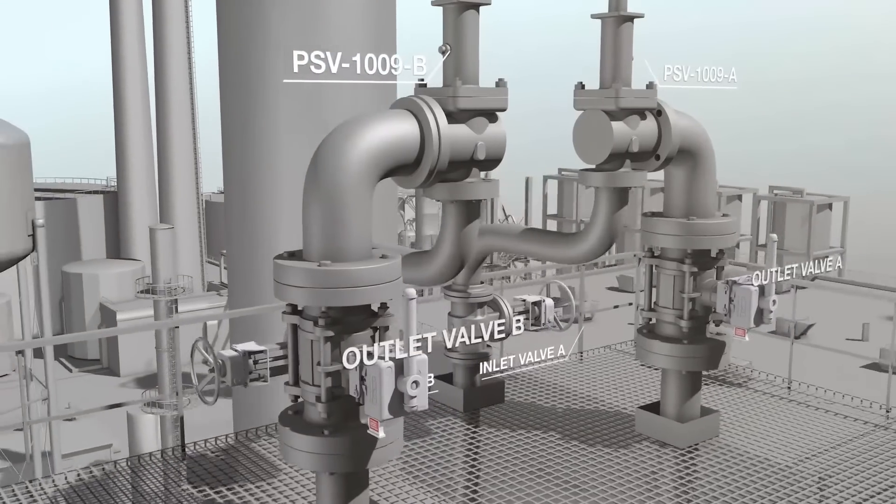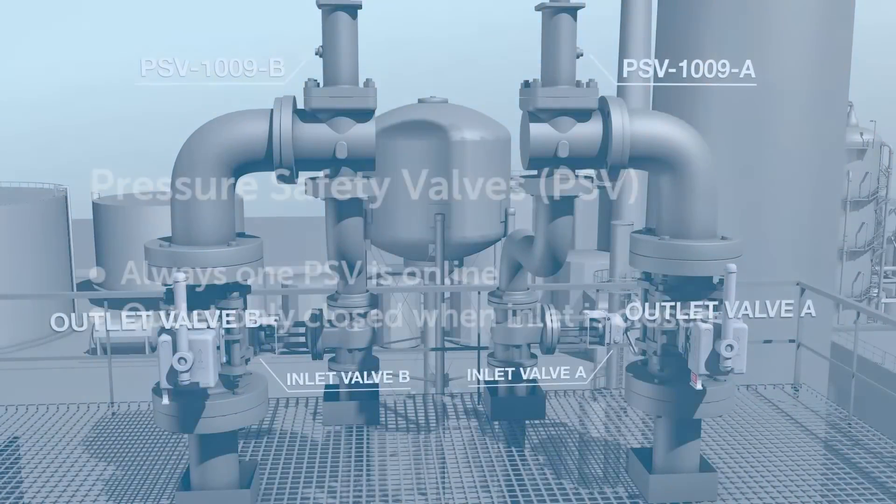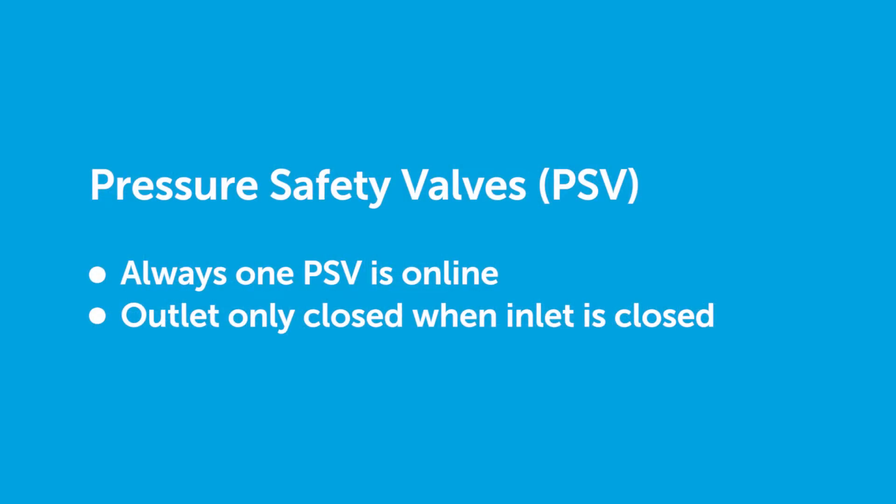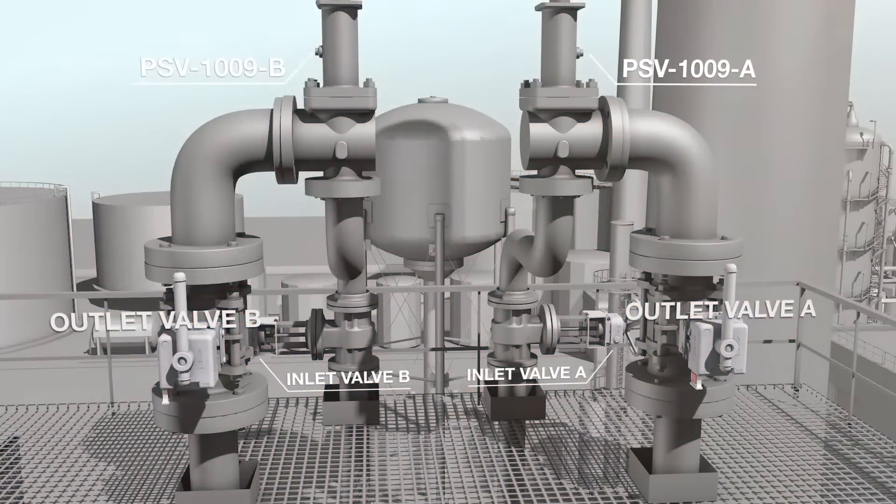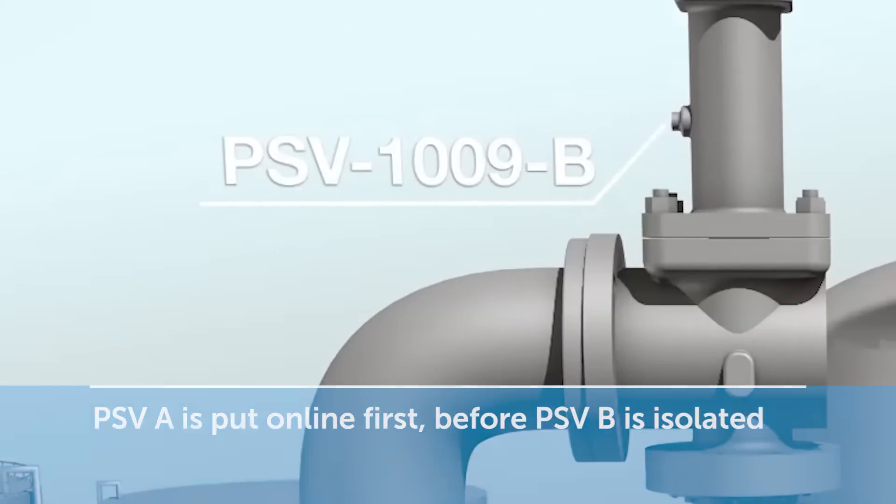In a parallel PSV system, inlet and outlet valves are interlocked to ensure that at least one relief valve is online at all times. In this example, PSV A is put online first before PSV B is isolated.